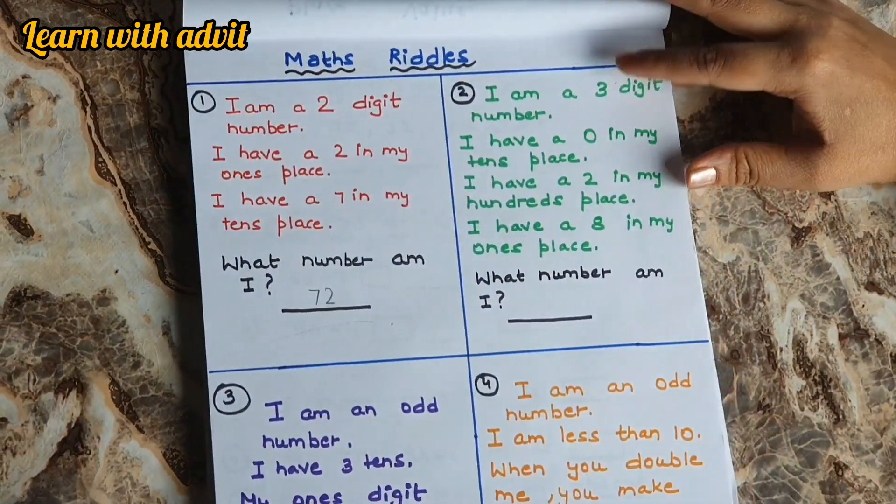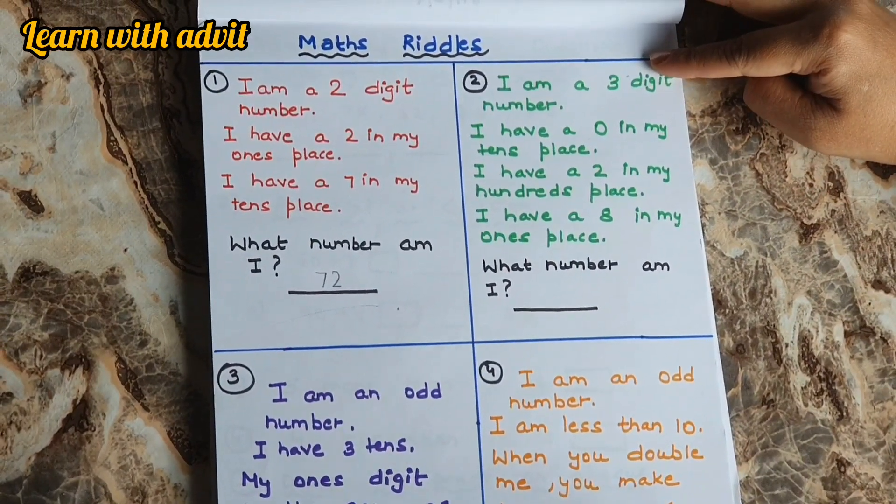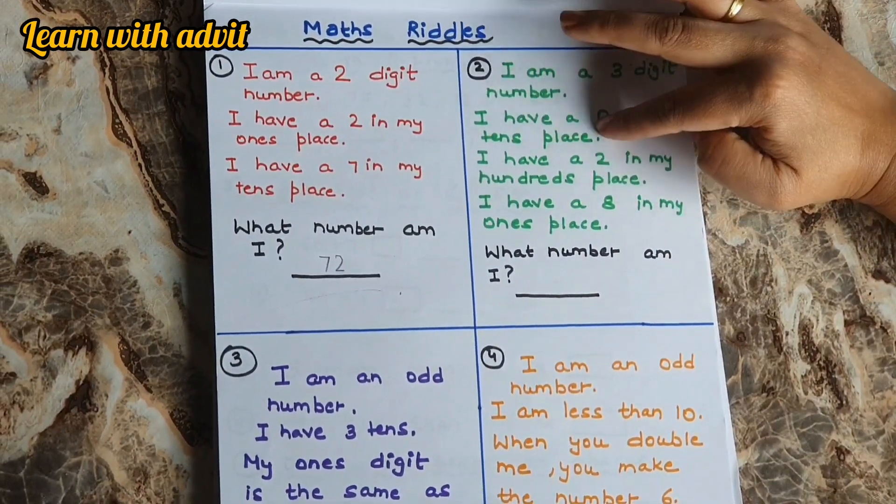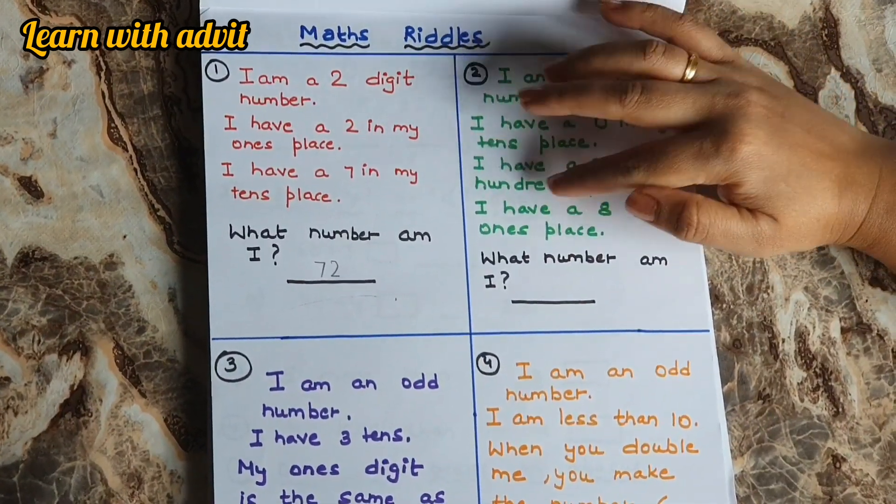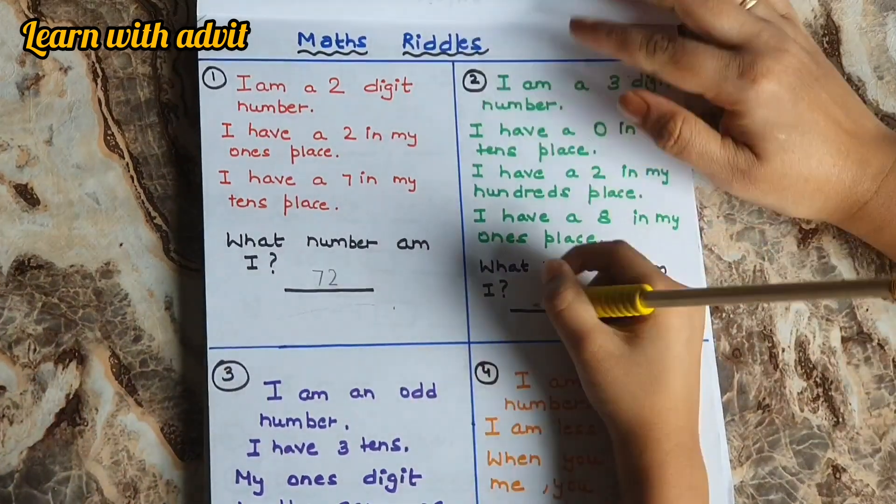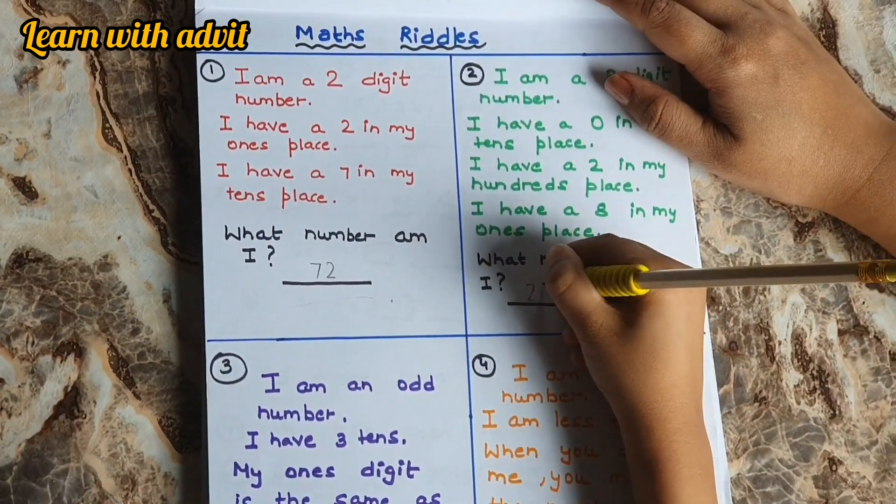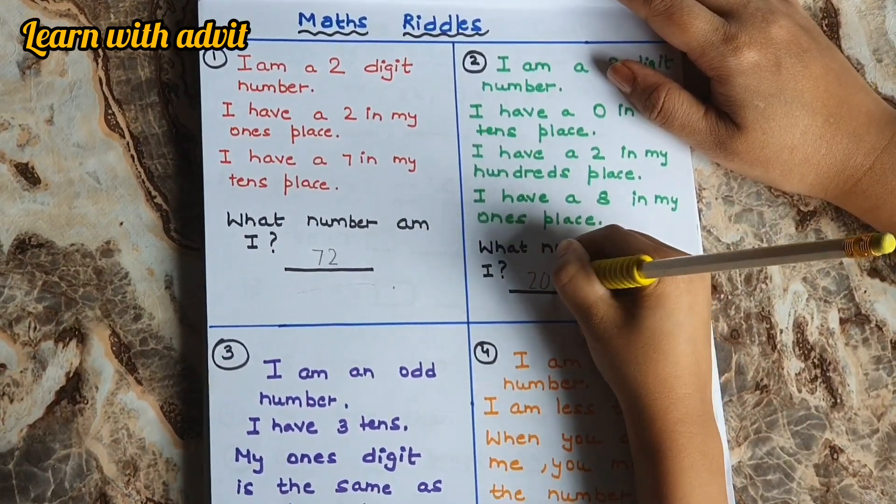I am a three-digit number. That means ones, tens, and hundreds. I have zero in my tens place, I have 2 in my hundreds place, and I have 8 in my ones place. What number am I? 208. Very good.